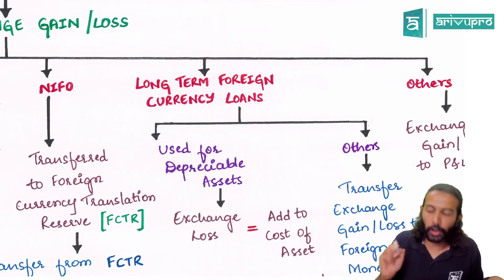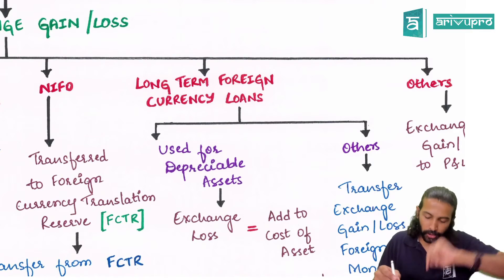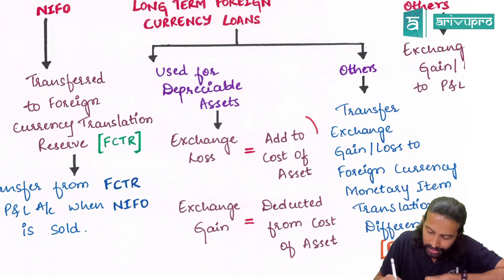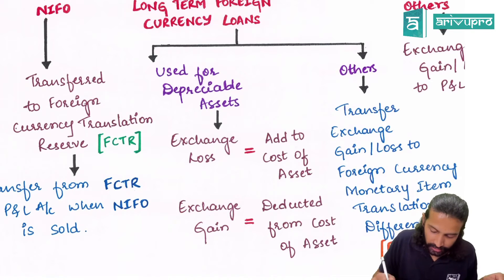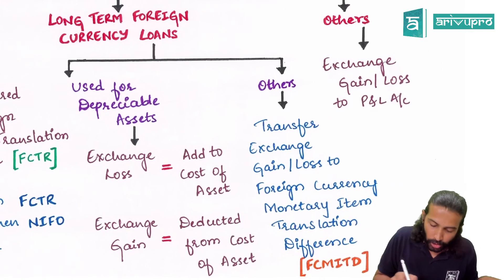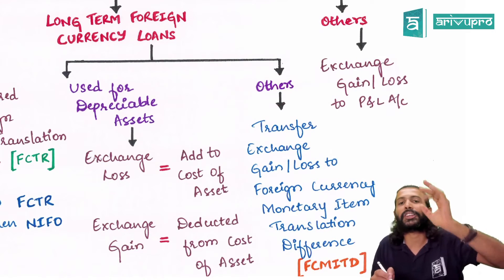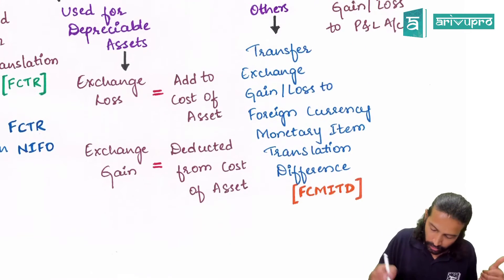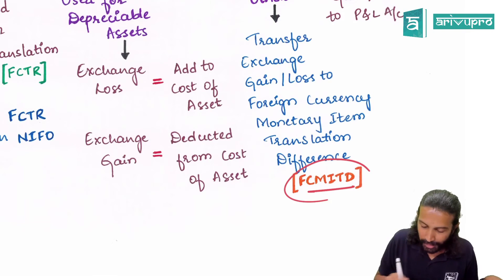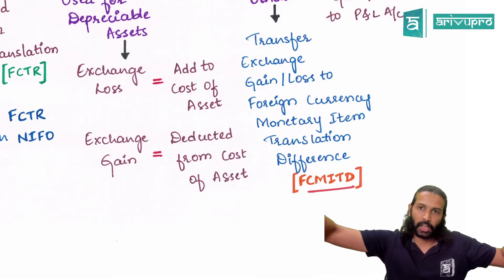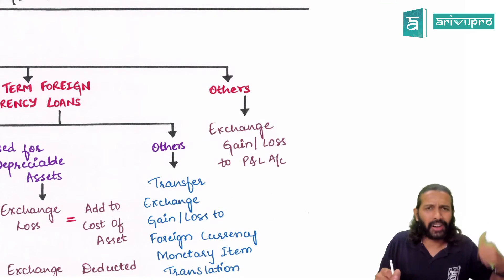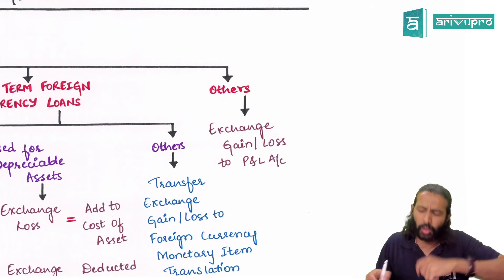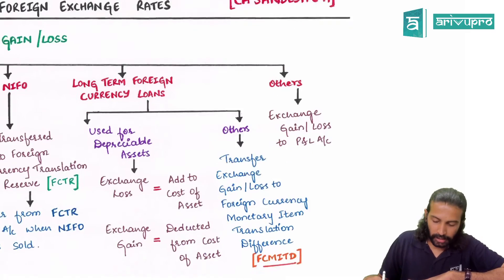For a long-term foreign currency loan, first check what it is used for. If used to purchase a depreciable capital asset, exchange loss is added to the cost of the asset and exchange gain is deducted from the cost. If used for other purposes, exchange loss can be accumulated in a reserve called Foreign Currency Monetary Item Translation Difference (FCMITD), and from FCMITD it will go to P&L over the loan duration. For a normal foreign currency transaction — not IFO or NIFO — exchange gain or loss goes directly to P&L.